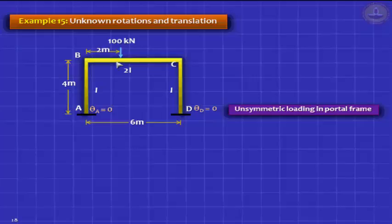I will give you a clue. Imagine that load is moving more to the left and pressing down. Will it sway to the right or to the left? It does not matter if you make a mistake, because your slope deflection method will give you a positive or negative answer. Delta positive means to the right, negative means to the left. But it is good to guess. Someone gave the right answer — it is to the right.